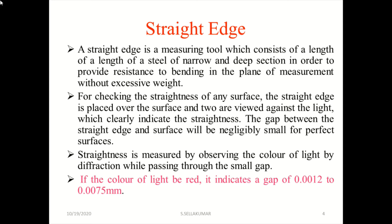The straightness is measured by observing the color of light by diffraction passing through the small gap. If the color of light be red, it indicates a gap of 0.0012 to 0.075mm. Beyond this limit of variation, the straightness won't be perfect.